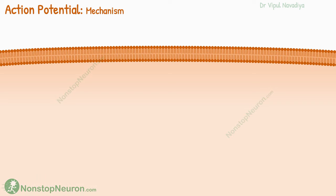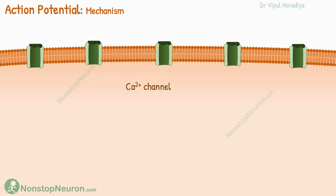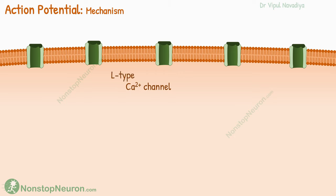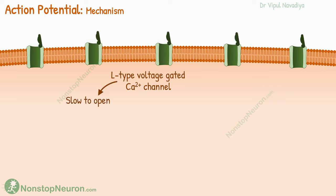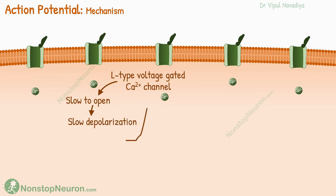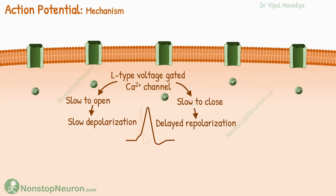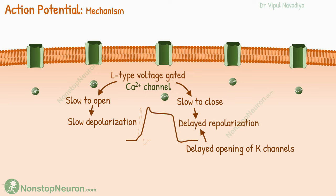Now let's talk about the mechanism of these potentials. The smooth muscles mainly have calcium channels; there are only a few sodium channels, so contribution of sodium to smooth muscle action potential is not significant. The action potential is mainly produced by calcium channels. These channels are L-type voltage-gated channels, which are slow to open. So the entry of calcium, and therefore the depolarization, is slower than in skeletal muscles. These channels are also slow to close, so repolarization is delayed. Additionally, the delayed opening of potassium channels also contributes to delayed repolarization. In some fibers, repolarization is so delayed that a prolonged plateau is seen. The calcium entering during an action potential contributes to the contractile process as well, so calcium in smooth muscles has a dual role: in stimulation as well as in contraction.